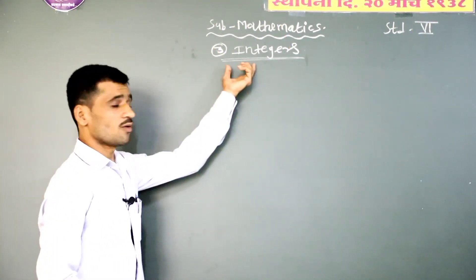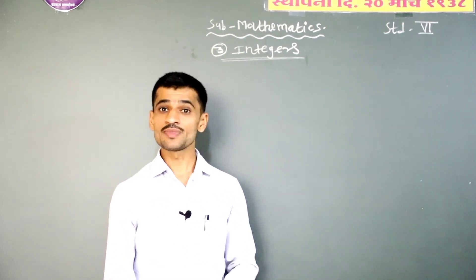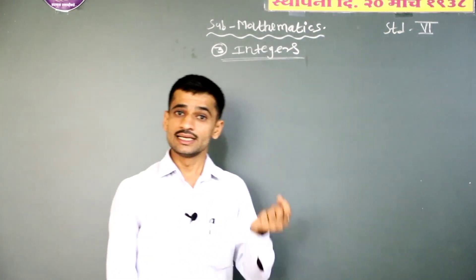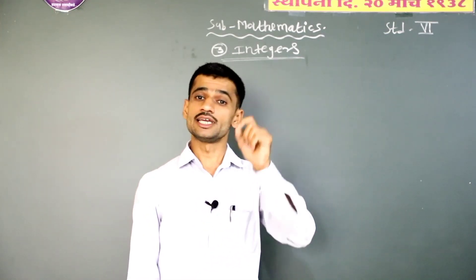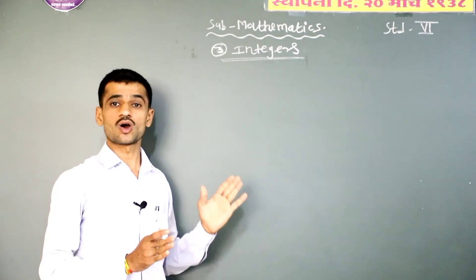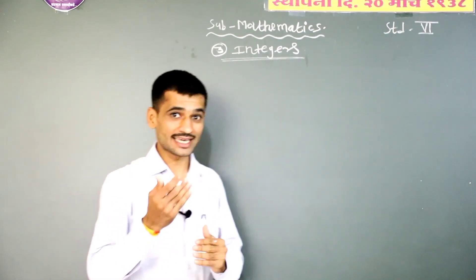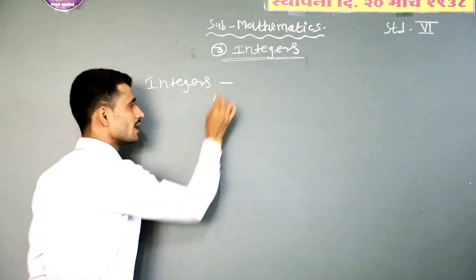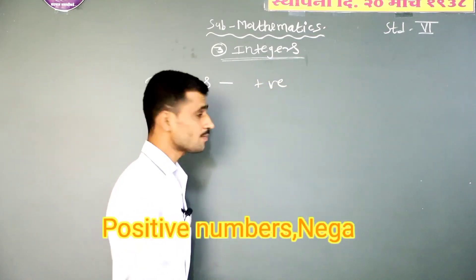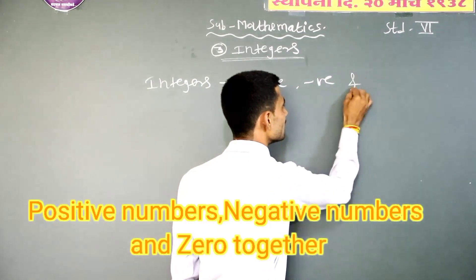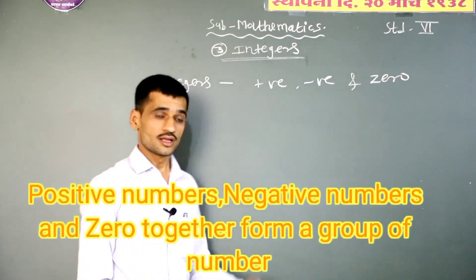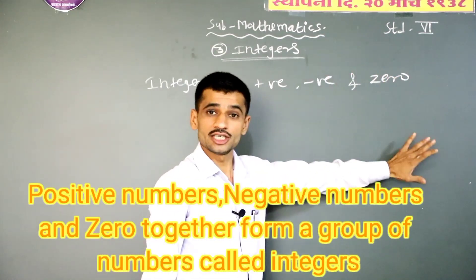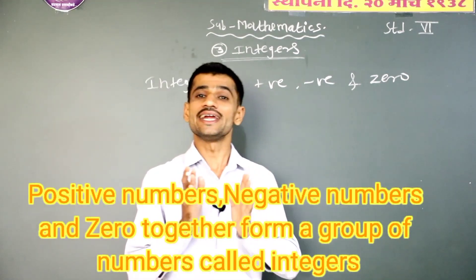Next, what is meant by integers? Integers — positive numbers and negative numbers, including zero, form a group of numbers called integers. So integers are the collection of positive numbers, negative numbers, and zero.